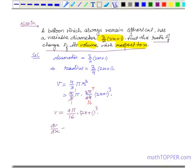We get 9π/16 multiplied by 3 times (2x + 1)² and the differentiation of 2x + 1 is 2.